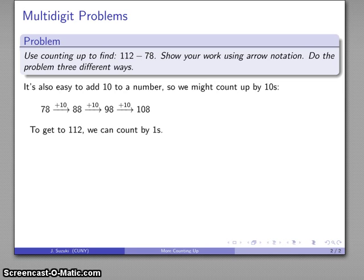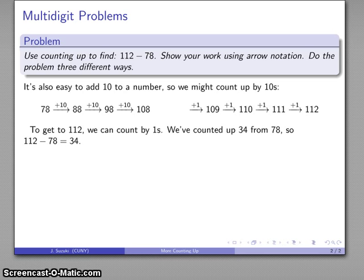At this point, I do want to get to 112. I've got to slow down and count up by 1s. So, here's 1 more, and again, and again, and again, and altogether I've gone up by 10, 20, 30, 31, 32, 33, 34. And so, once again, 112 minus 78 is equal to 34. And this is something we can do if we know very little beyond how to find the next number.